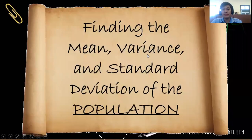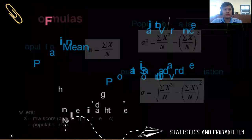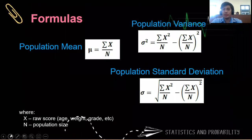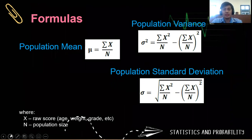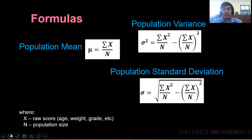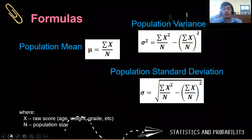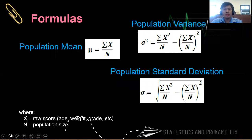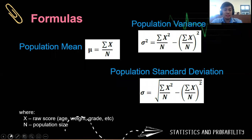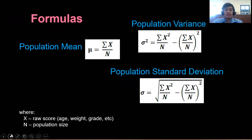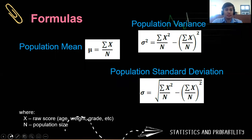Let's start with finding the mean, the variance, and the standard deviation of a population. For the population mean, we have mu is equal to the summation of x over n. For the population variance, we have sigma squared is equal to the summation of x squared over the population size minus the summation of x over the population size n, squared. To get the population standard deviation, simply get the square root of the population variance. Note that x is the raw score and n is the population size.